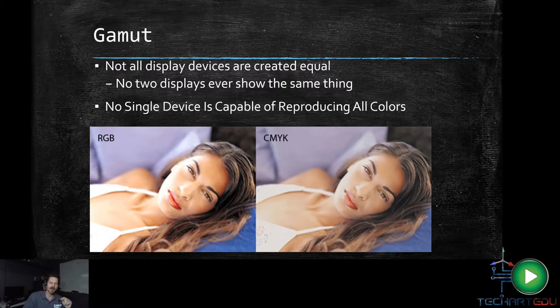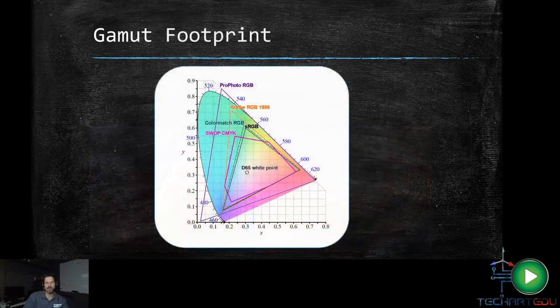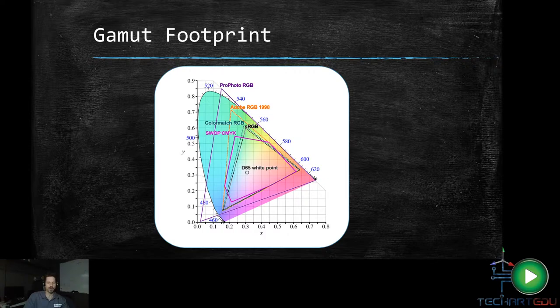So what this really means is that not all display devices are created equal. So the display device on your monitor is not the same as your display device on your telephone. It's not the same as on your television. It's not the same on your computer monitor. No display, no two displays can really ever show the same thing. And no single one device is capable of reproducing all colors. You say, hey, wait a second, my monitor does a pretty good job. Eh, well, as it turns out, not really. Because when you take a look at this gamut footprint chart, now the gamut is the amount of color that we can actually see.